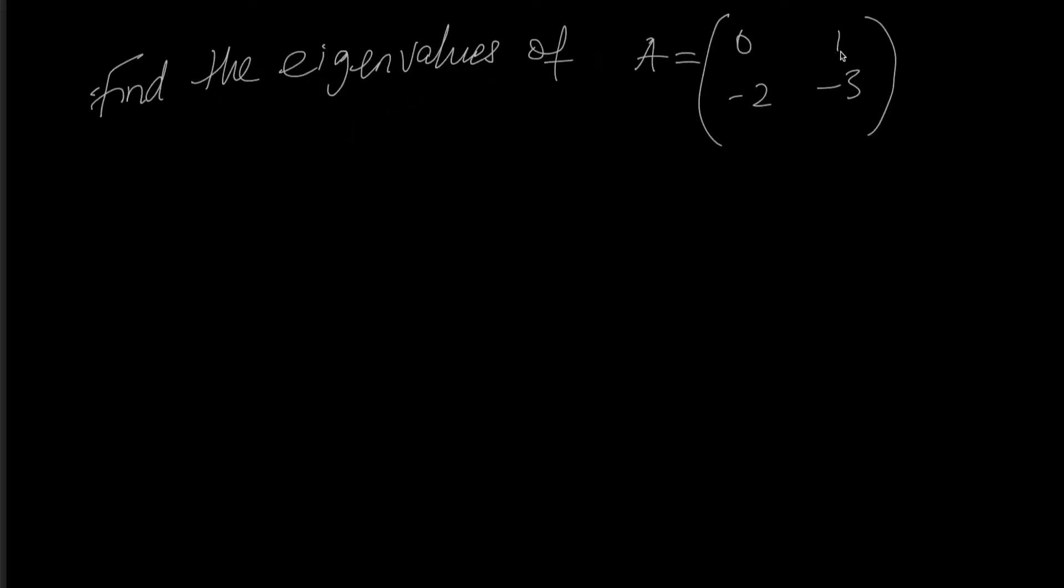Find the eigenvalues of this square matrix. The first thing we need to do is write out the characteristic equation, which is A minus the eigenvalue multiplied by the identity matrix, set equal to zero.